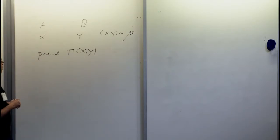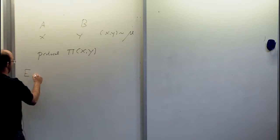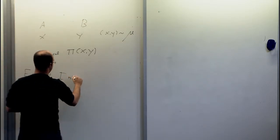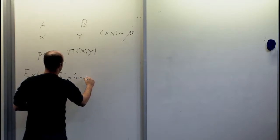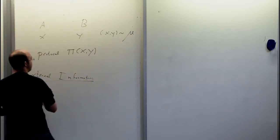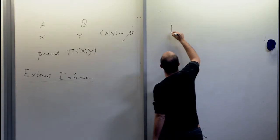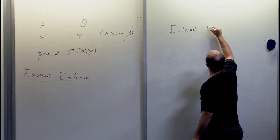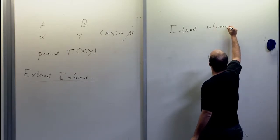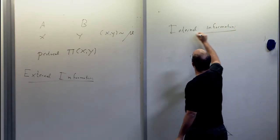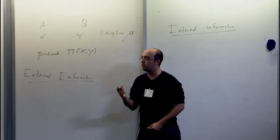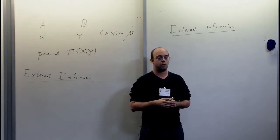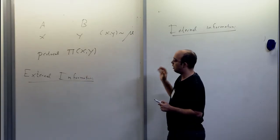There are two natural ways to measure information: external information and internal information. The question is: based on the protocol, what do you learn about the inputs? The difference is who is learning.